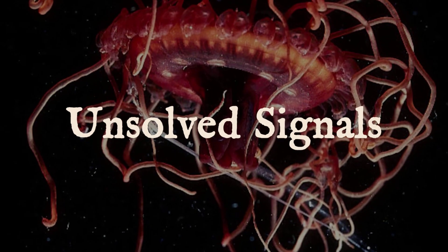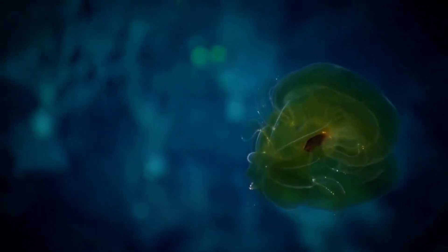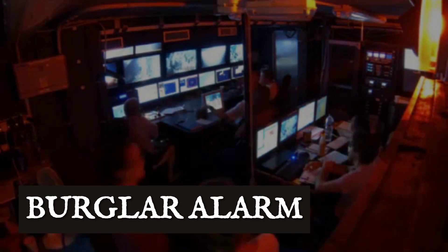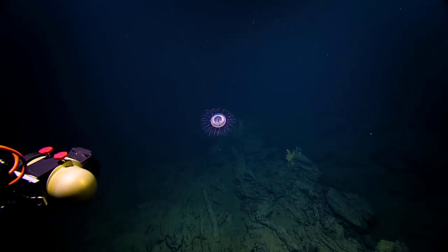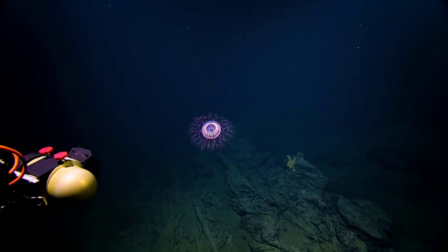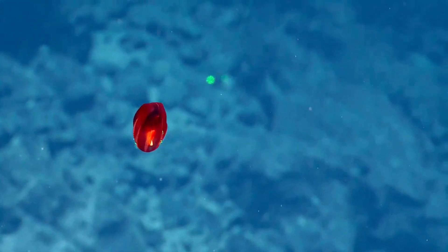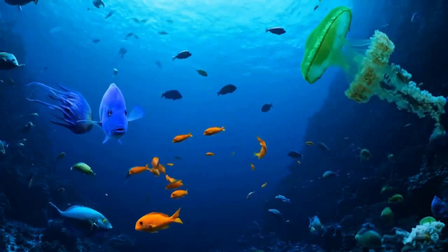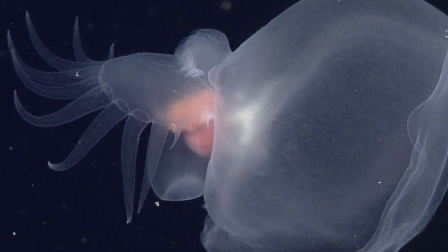An atolla jelly drifts through the black, trailing a spiral of blue flashes that ripple outward in perfect circles. When threatened, it unleashes a burst of light so sudden and intense that even robotic cameras struggle to keep up. Scientists call it the burglar alarm. No two displays are identical. Some last less than a second. Some loop again and again, flooding the water with signals that no human fully understands. Nearby, the bloody belly comb jelly glows with a deep, impossible crimson. In a world where nearly all bioluminescence is blue, its light slips through the dark, nearly invisible to most predators.